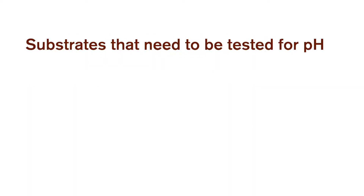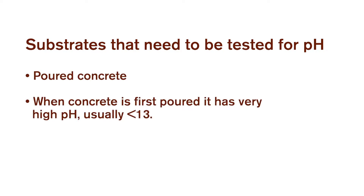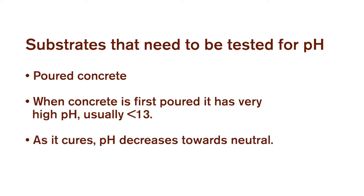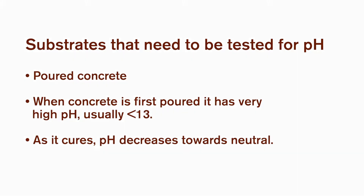Substrates that need to be tested for pH — poured concrete. When concrete is first poured, it reads very high on pH, usually greater than 13, which is high alkalinity. As concrete cures, it decreases its alkalinity, which reduces its pH on the scale towards neutral.